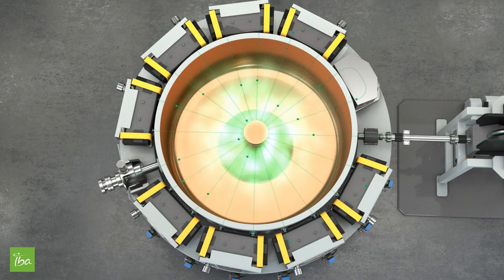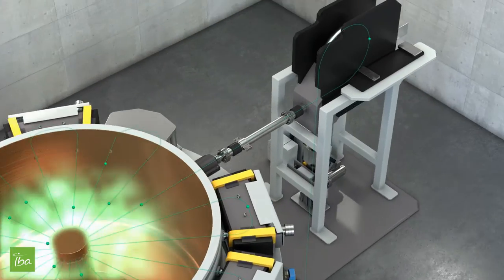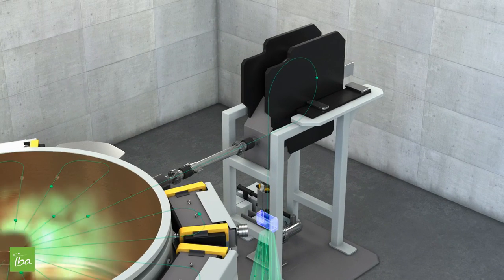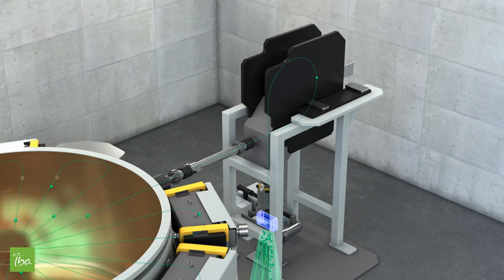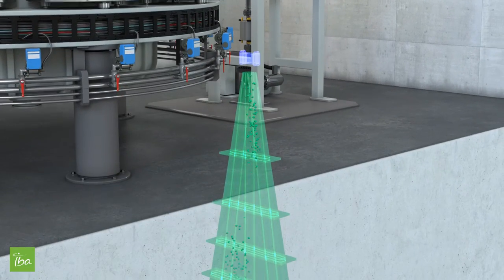If a lower energy is required, another beam exit can be chosen just by switching off the deflection magnet corresponding to this energy. The beam line transports the electrons up to the product to be irradiated. The 270 degree magnet bends the electrons.